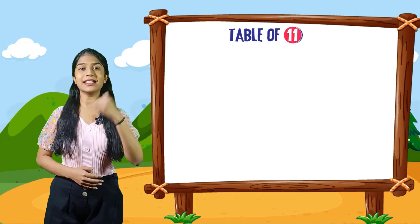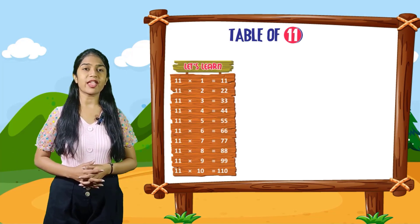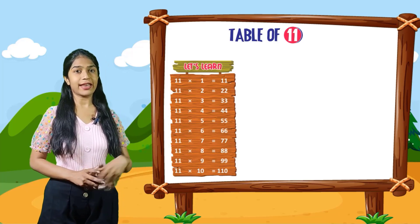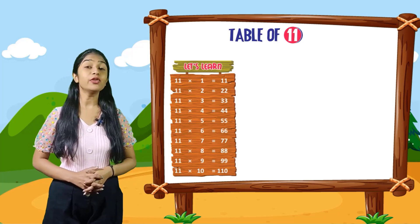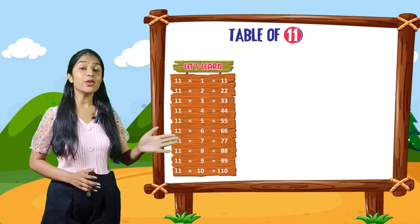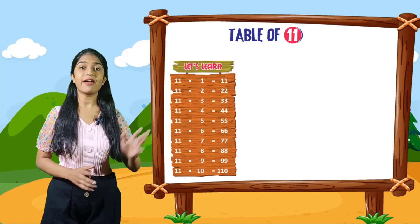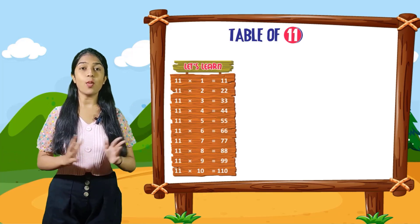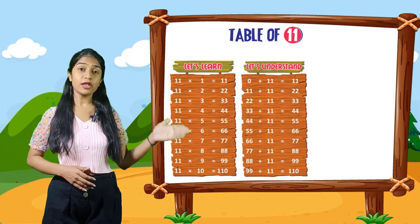So now we will do the table of 11. Let's learn. 11 into 1 is equal to 11. 11 into 2 is equal to 22. 11 into 3 is equal to 33. 11 into 4 is equal to 44. 11 into 5 is equal to 55. 11 into 6 is equal to 66. 11 into 7 is equal to 77. 11 into 8 is equal to 88. 11 into 9 is equal to 99. 11 into 10 is equal to 110.